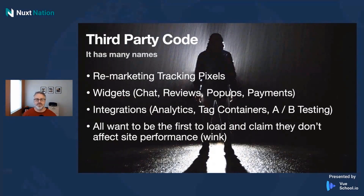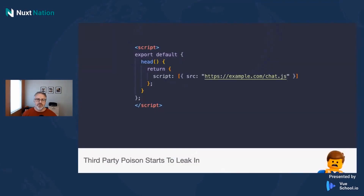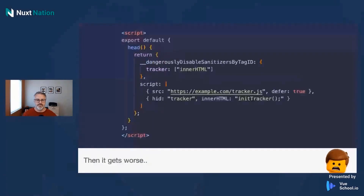It could be an integration such as analytics or tag containers, or even A/B testing tools. And of course, all of them want to be the first to load, and they all claim they don't affect site performance. Usually when you integrate these providers into your code base using Vue Meta, it looks something like this. This is a simple chat example, just using the head function and a script tag. If you need to do something more advanced — say you have a function that you need to fire as soon as a tracker is loaded — you have to define the inner HTML for the JavaScript section you want to execute, as well as add dangerously disabled sanitizers by tag ID. It sounds kind of ominous, and it kind of should be — it lets you know that you're doing something a little bit weird.